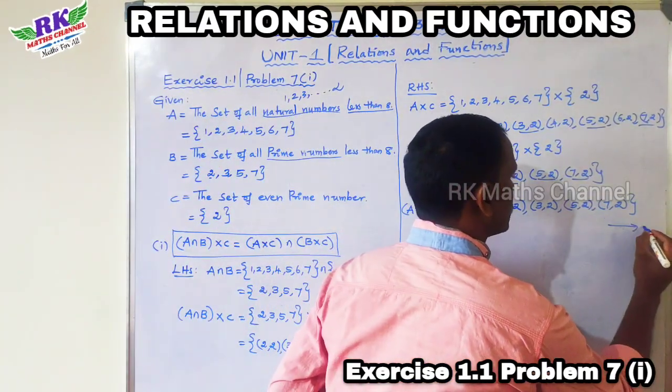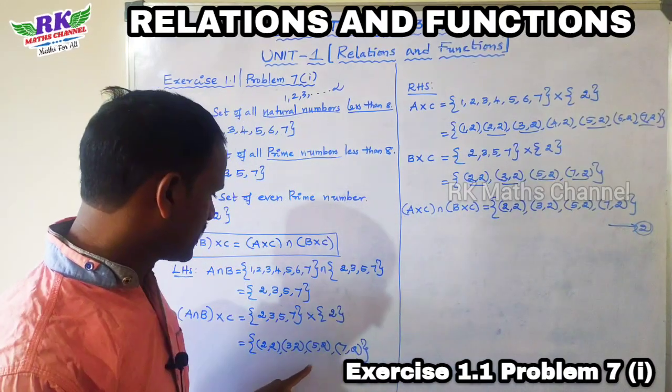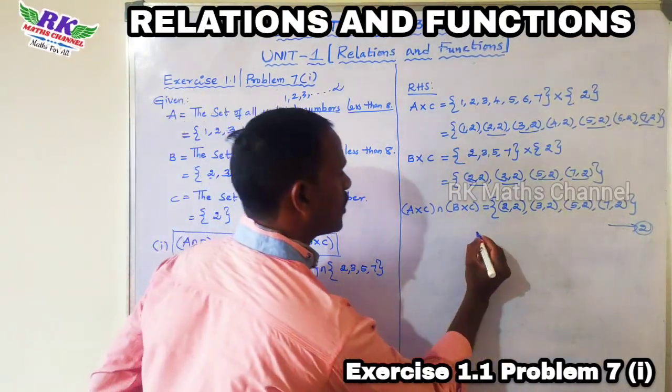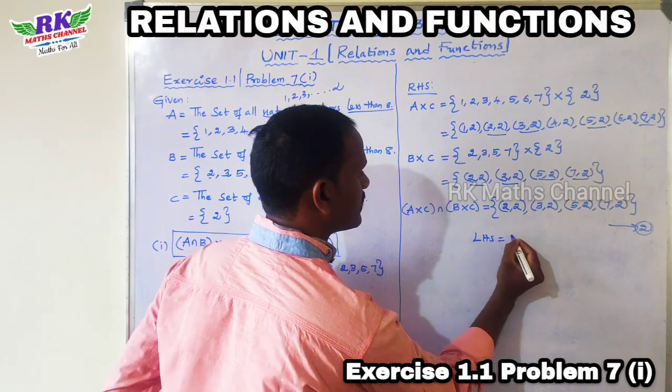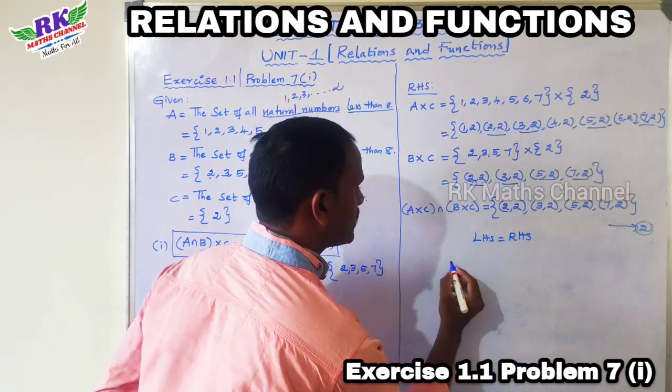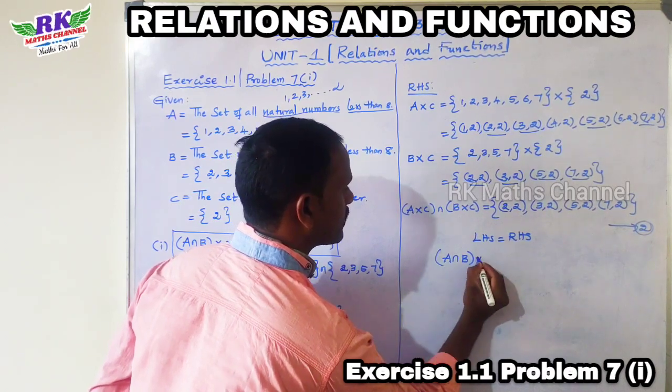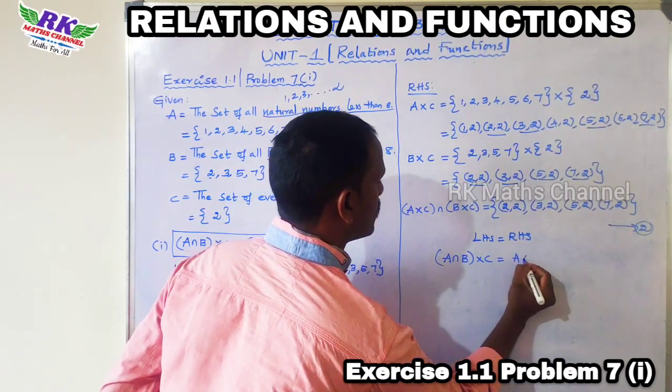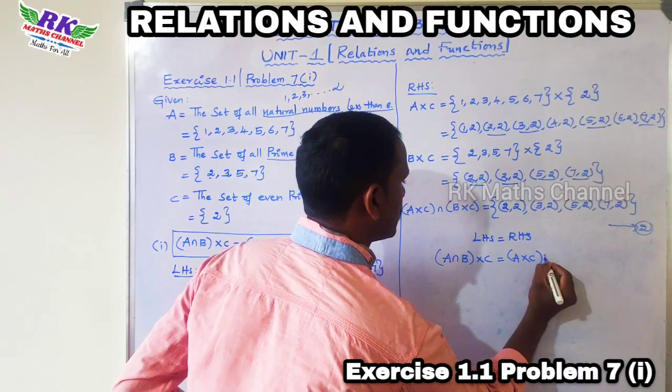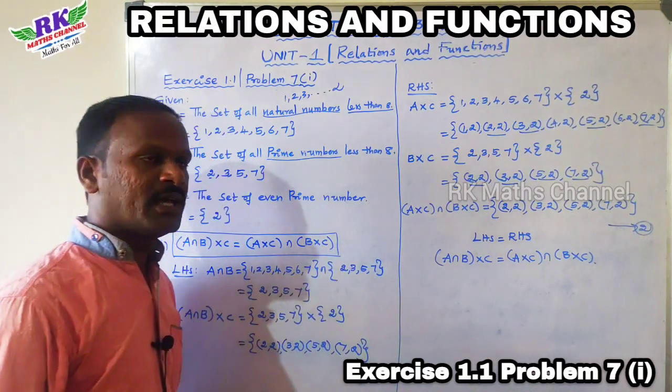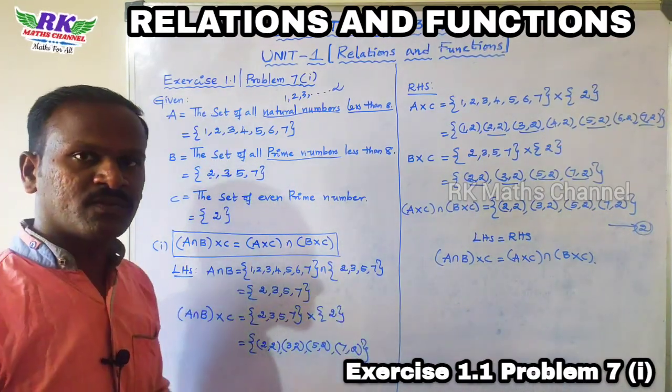This is equation number 2. Check equations 1 and 2. Both are equal. So LHS is equal to RHS. A intersection B cross C is equal to A cross C intersection B cross C. This is the first question.